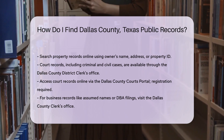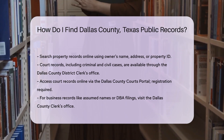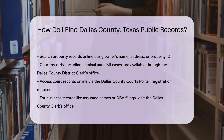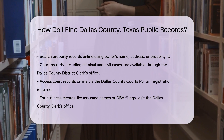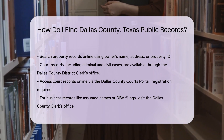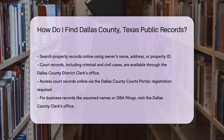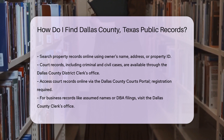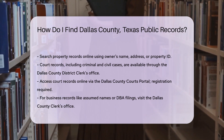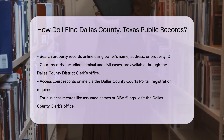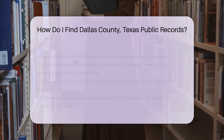For business records, such as assumed names or DBA filings, visit the Dallas County Clerk's Office. You can search and request these records online. The fee for a certified copy of an assumed name certificate is $10.